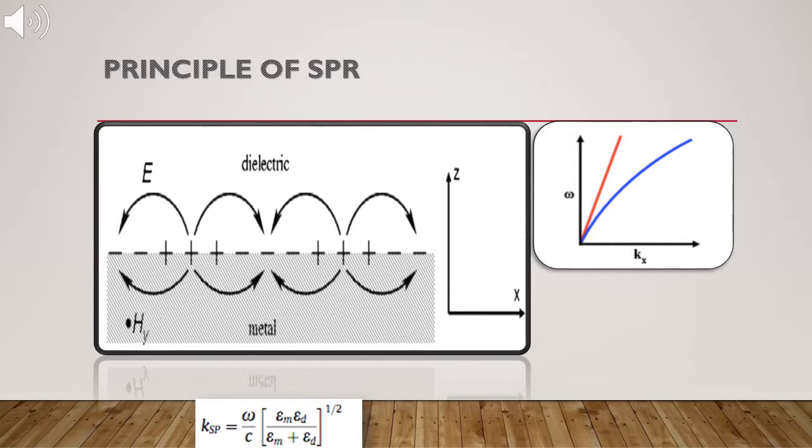The surface plasmons can be optically excited if phase matching condition is satisfied. Phase matching implies that the projection along x-axis of the incident light wave vector matches the propagation constant of surface plasmon Ksp.